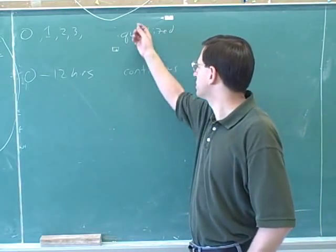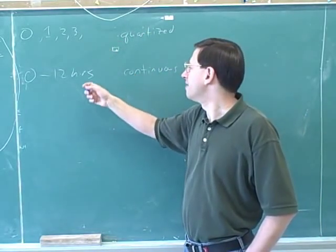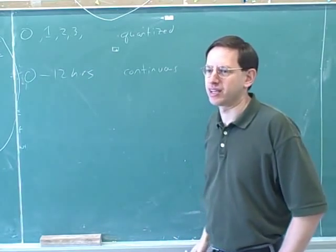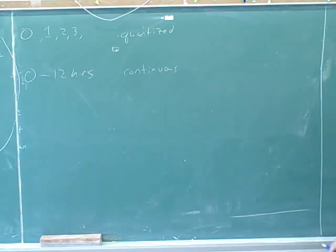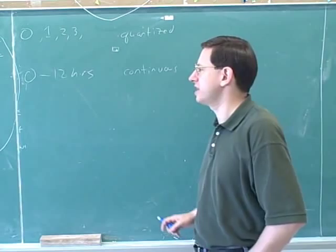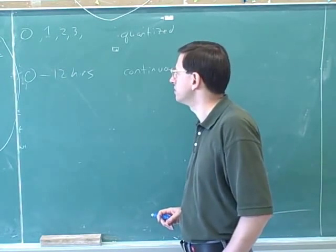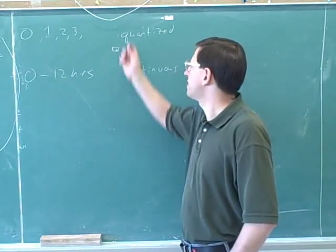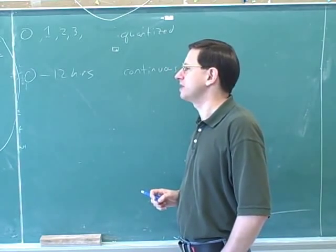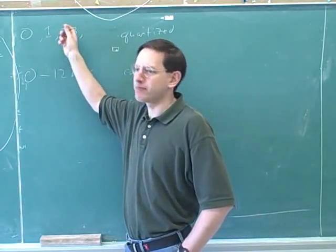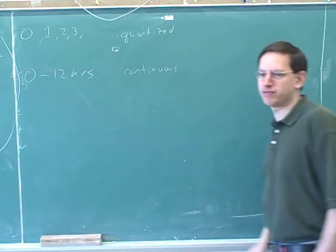I think it's easiest to understand the difference between quantized and continuous by looking at these examples here. The amount of sleep you would get in the night is continuous because it could take on pretty much any value over a continuum. But the number of children a family has is quantized, not because the number of children has to be an integer, but because there's gaps between the possible values that can't get filled in.